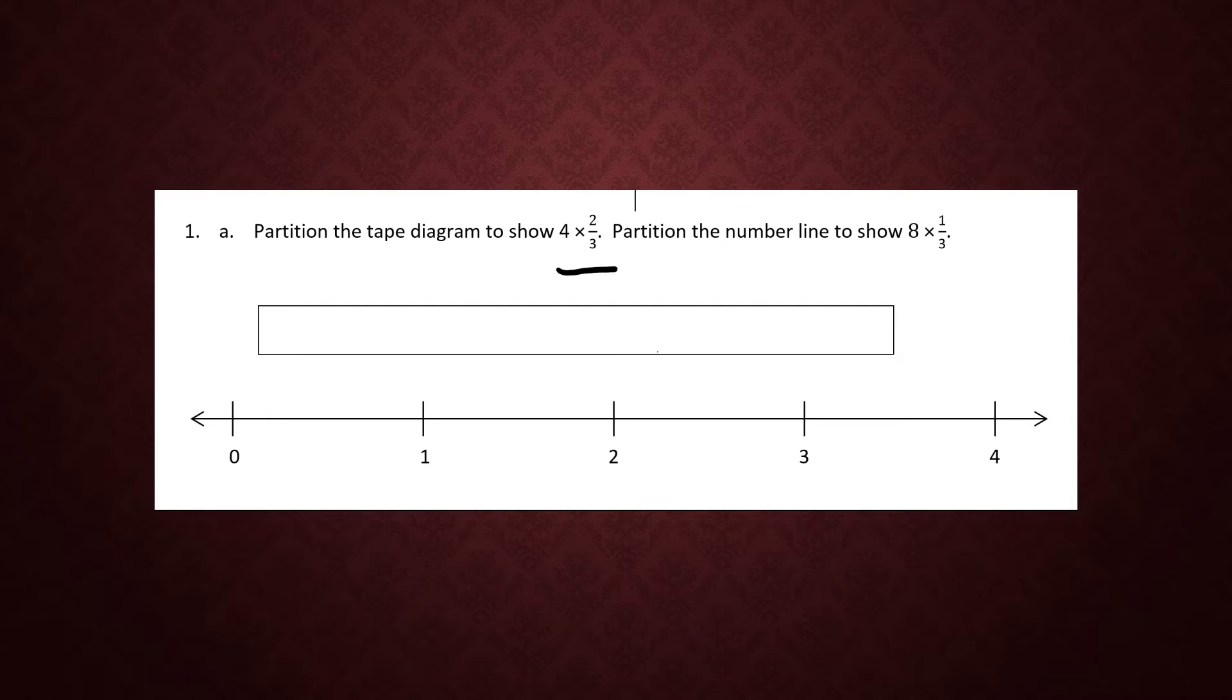Because we're multiplying by 4, I want 4 sections of the diagram. Then we're going to put the fraction inside each box that we're multiplying together. So we're going to have 2 thirds, 2 thirds,